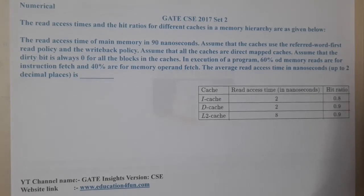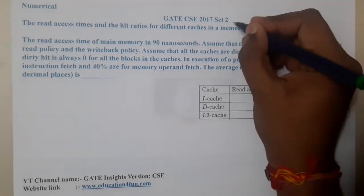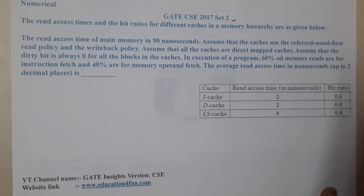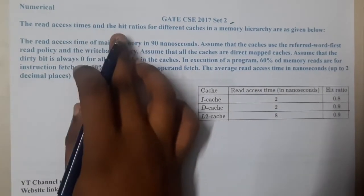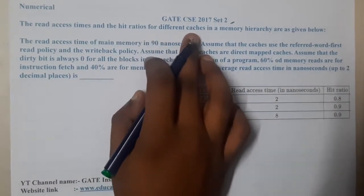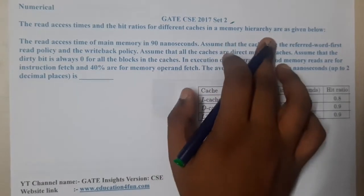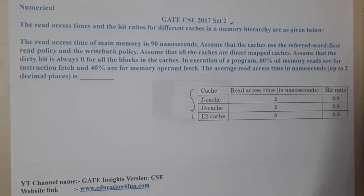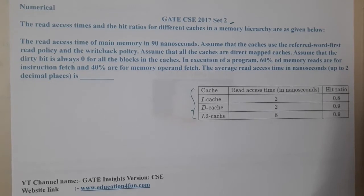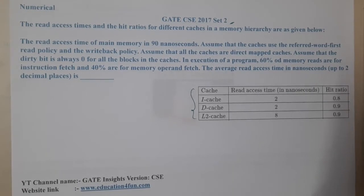Hello guys, we are back with our next lecture. This question belongs to GATE CSC 2017 Set 2. The question involves the read access time and hit ratio of different caches in a memory hierarchy. The read access time of the main memory is 90 nanoseconds.